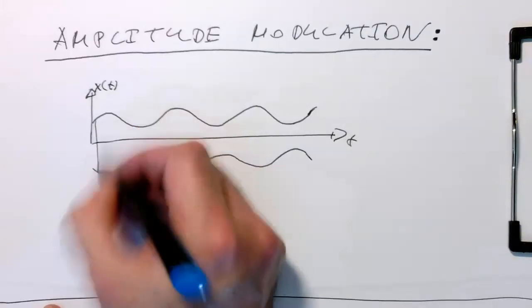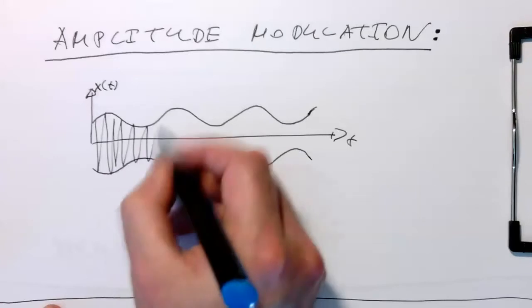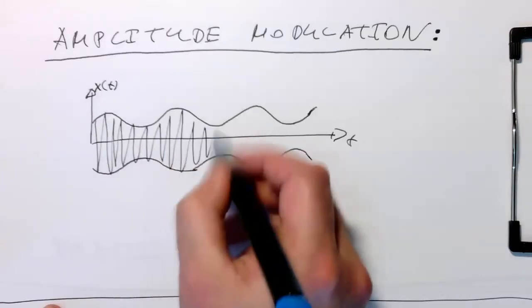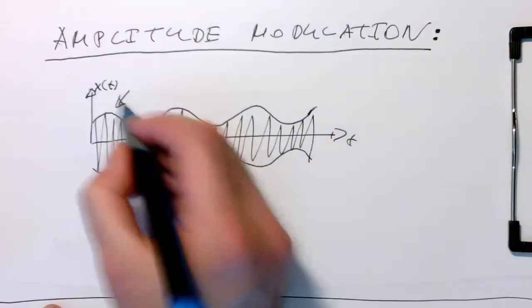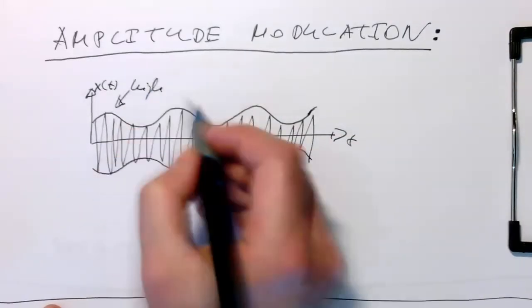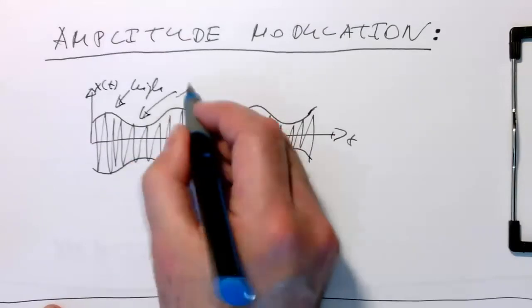And then we've got the carrier. The carrier is just changing amplitude here. So here we've got a high amplitude and then we've got a low amplitude. Very simple.